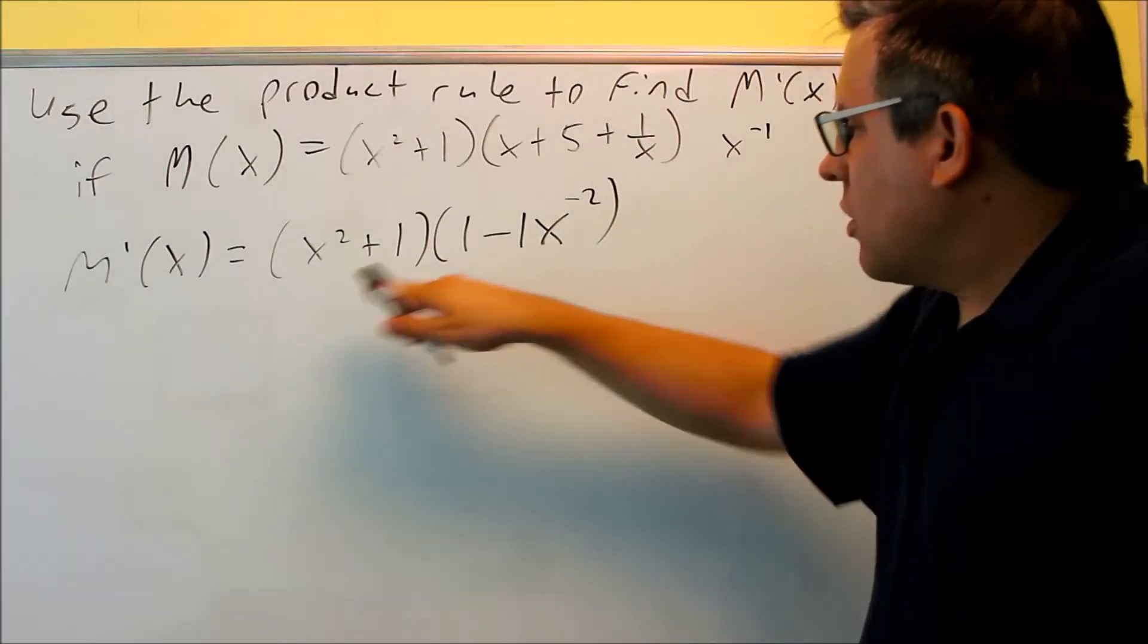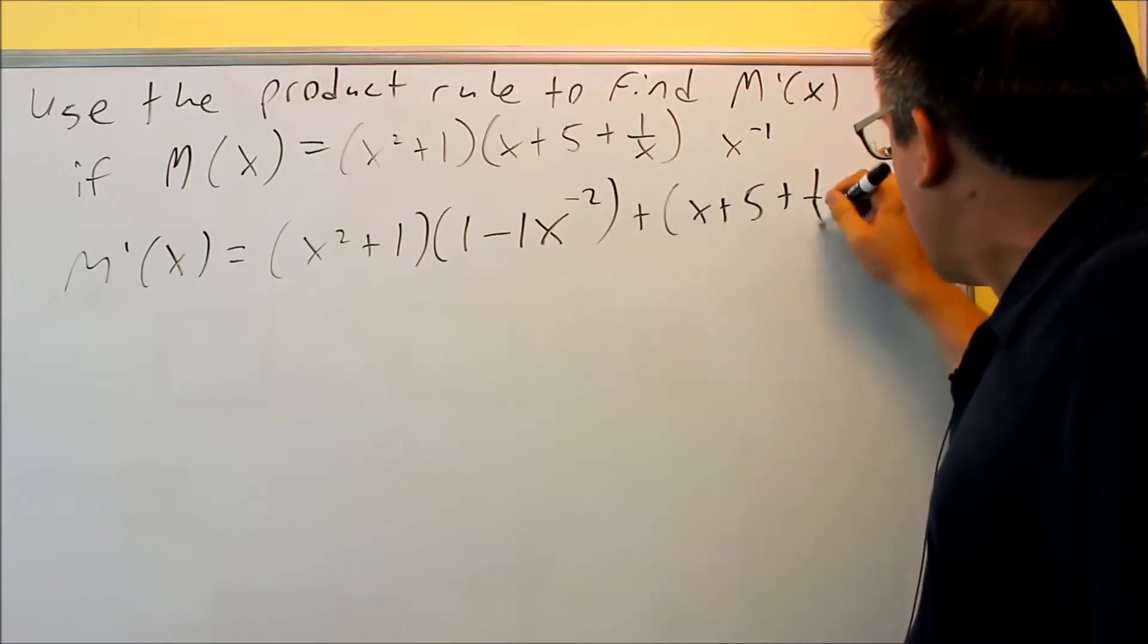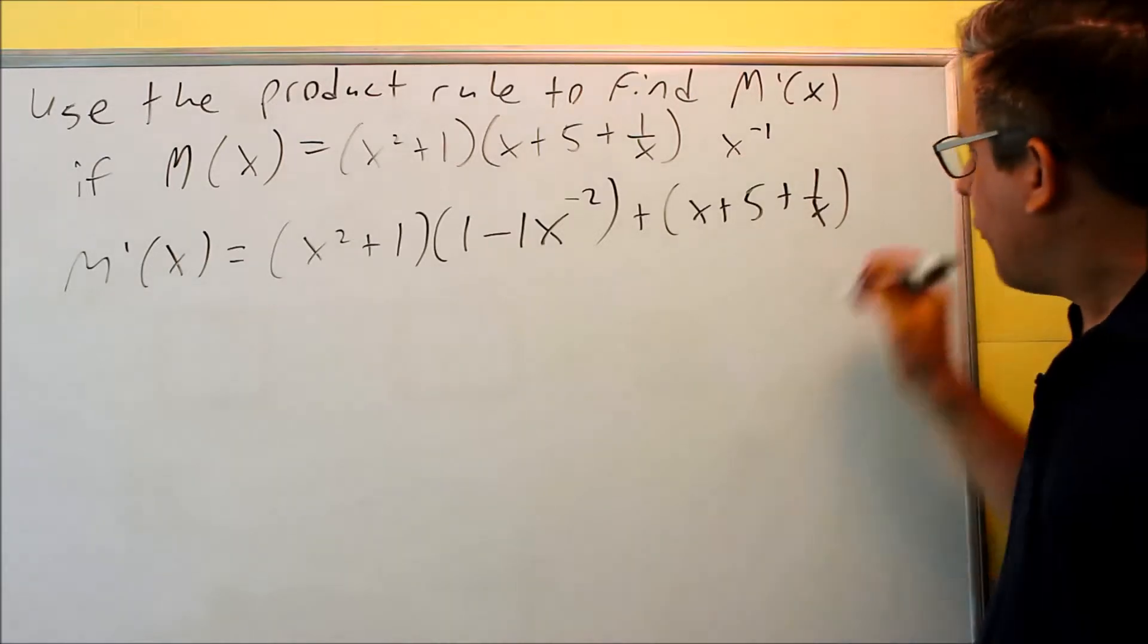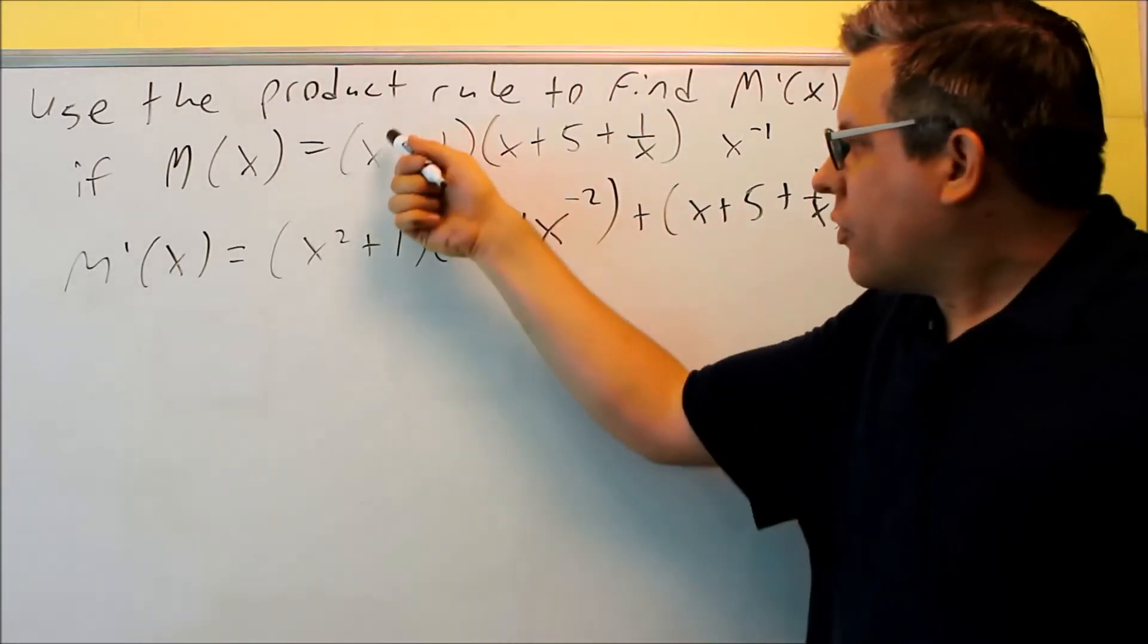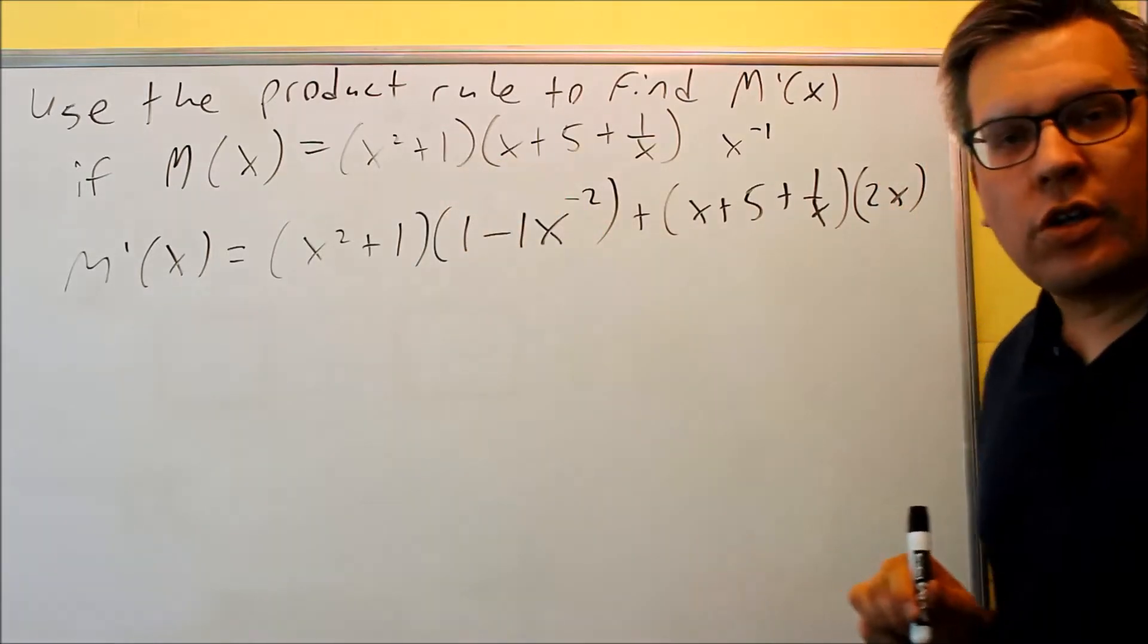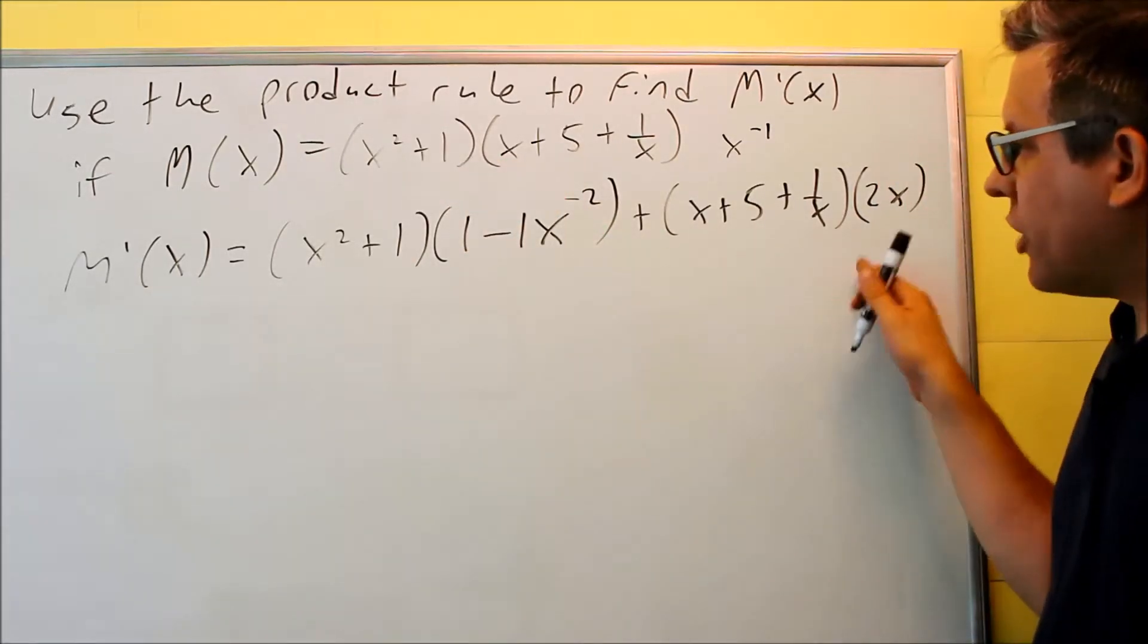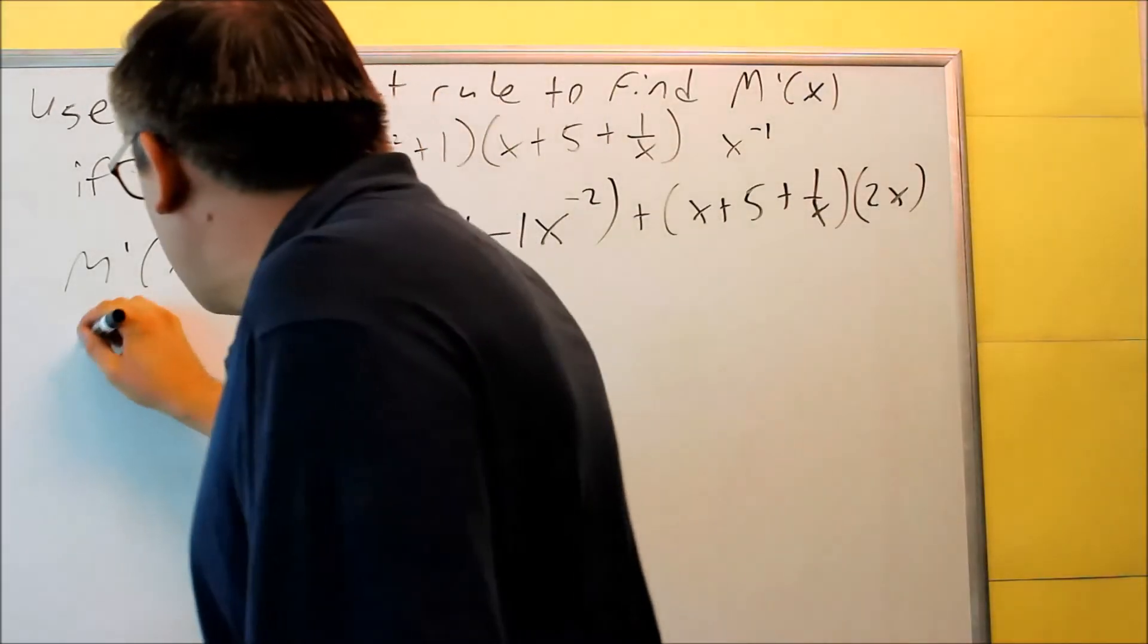So I have the first thing, times the derivative of the second, plus the second thing, x plus five, plus one over x, times the derivative of the first. The derivative of this, we just have a two x, derivative of one, zero. So we're done applying the product rule, now we're just going to clean this up a little bit by multiplying everything out.